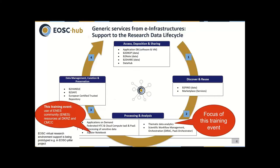Additionally, there are important infrastructure components to support cross-disciplinary data use — for example, sharing data and persistently identifying data — all referring to the key components of the FAIR data principles highlighted before.